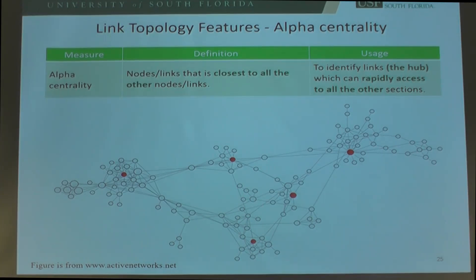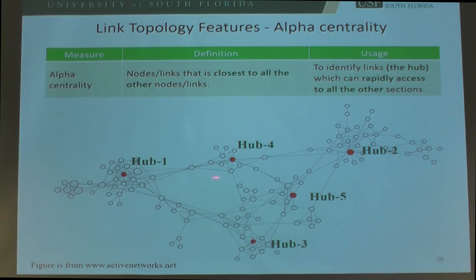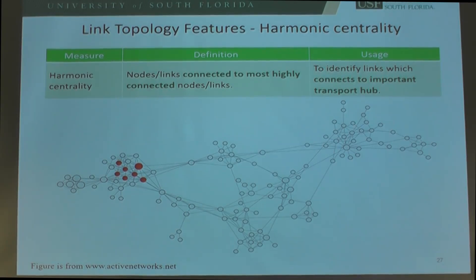As you can see in the network, red dots are nodes with higher betweenness centralities — removing them results in disconnected components. The next topology feature is closeness centrality, which identifies nodes or links closest to all other nodes or links — in a transportation system, these are hubs that can rapidly access all other nodes. The identified nodes using closeness centrality are highly connected with all neighbors, which are the hubs in the transportation system.